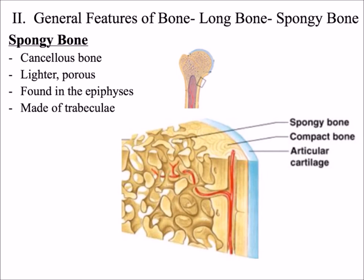Some people think that because spongy bone is porous, it's not very strong — that's actually wrong. Spongy bone is very strong, and the reason is because these trabeculae resemble osteons. But remember, osteons run parallel to one another along the length of the shaft. Trabeculae run in all different directions, which means that spongy bone can withstand forces in all different directions.